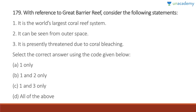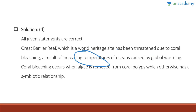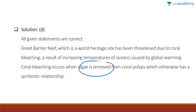Question 179: The Great Barrier Reef is the world's largest coral reef system — correct. It can be seen from outer space — correct. It is presently threatened due to coral bleaching — also correct. Answer is D, all of the above. The Great Barrier Reef, a World Heritage Site, is threatened by coral bleaching caused by rising ocean temperatures due to global warming. Coral bleaching occurs when algae is removed from coral polyps, disrupting their symbiotic relationship.